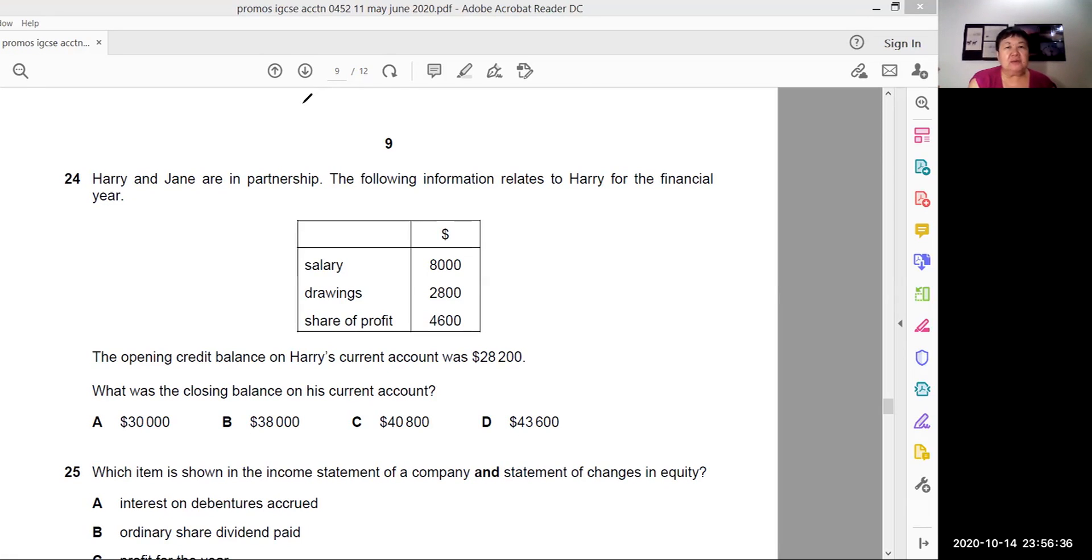Okay, this is question 24. Question 24 reads, Harry and Jane are in partnership. The following information relates to Harry for the financial year. They've given you some information here: salary, drawings, share of profit. The opening credit balance of Harry's account was $28,200. What was the closing account on this current account balance?